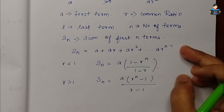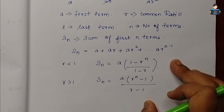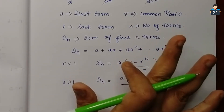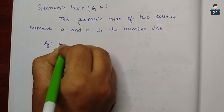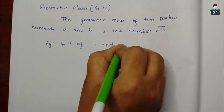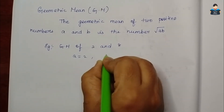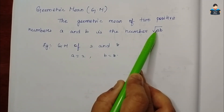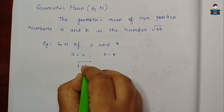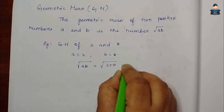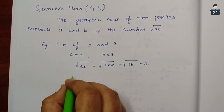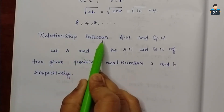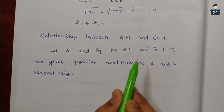Now the relationship between AM and GM - that is, arithmetic mean and geometric mean. For two positive numbers A and B, the geometric mean is the square root of AB. For example, square root of 2 times 8 equals square root of 16, which is 4.